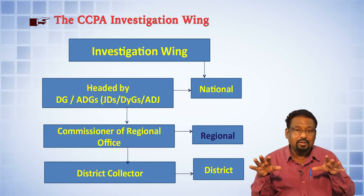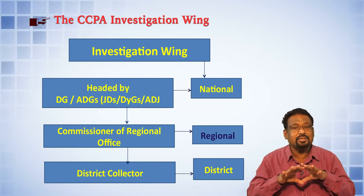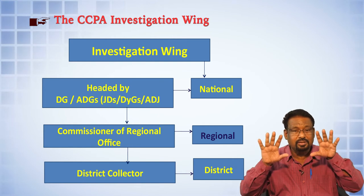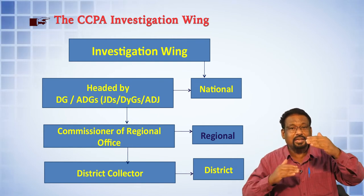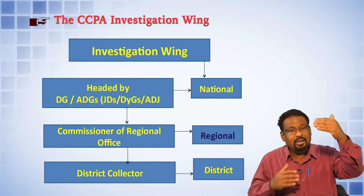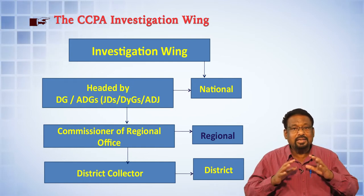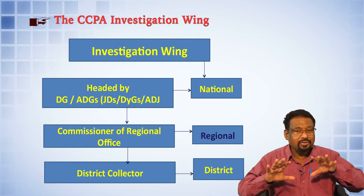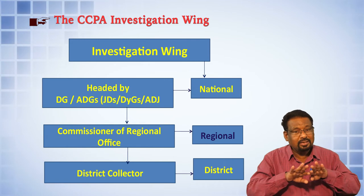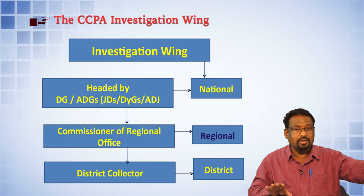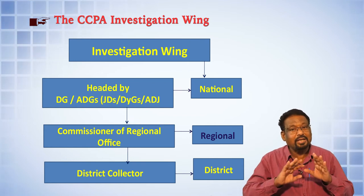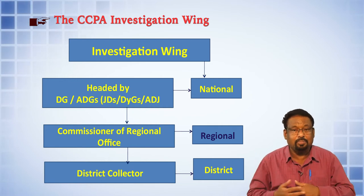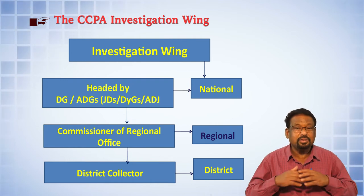At the second tier, there is a regional level — the nation is divided into several regional levels, possibly east, south, north, west, north-east, or similar criteria. A regional officer is created between the district level and the national level, with an ADG or JDS level officer appointed. At the district level, an investigation wing is also created. The councils' function is only to provide advisory advice; the investigation wings carry out investigation based on complaints received or suomotu complaints. That is the function of the Central Consumer Protection Authority.